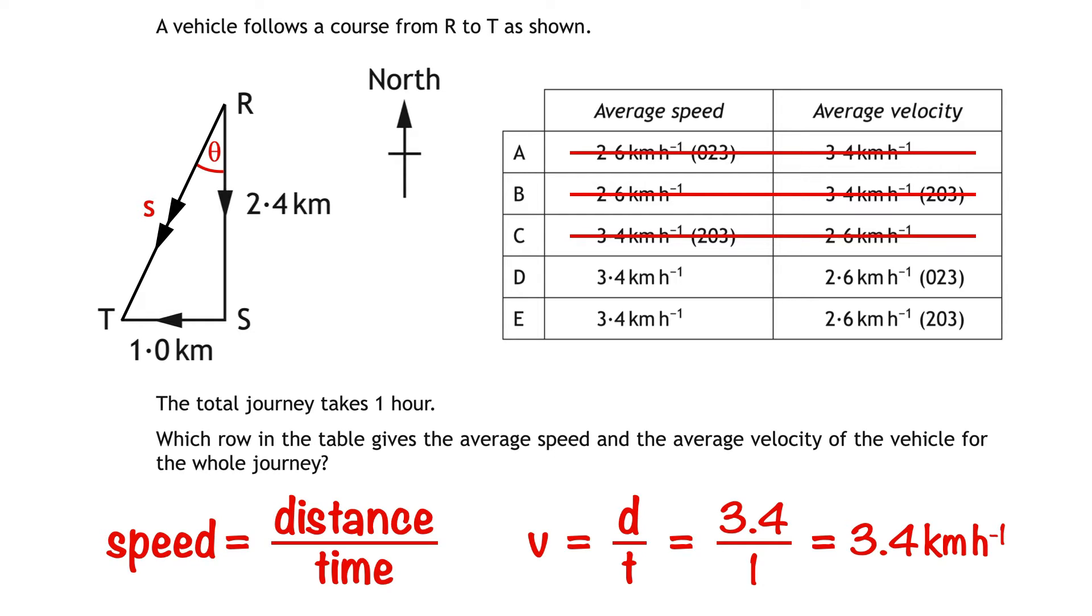It's also possible to find the answer without calculating the vehicle's direction. The directions given in answers D and E are both stated as bearings and looking at the diagram we need to remember that north has a bearing of 000, east has a bearing of 090, south is 180 and west is 270. The direction of the vector from R to T is somewhere between 180 and 270 meaning that our answer must be E. So you'll see that in some multiple choice questions it's possible to arrive at the correct answer without calculating everything.